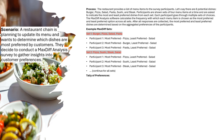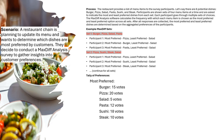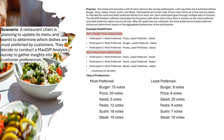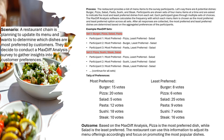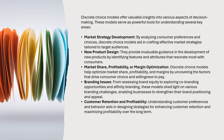For example, set one includes burger, pizza, salad, and pasta; set two includes pizza, sushi, steak, and salad. Participants ranked each set, indicating their most and least preferred options. After tallying all preferences, the most preferred votes are: burger 15, pizza 20, salad 5, pasta 12, sushi 18, steak 10. Least preferred votes are: burger 8, pizza 6, salad 25, pasta 9, sushi 7, steak 16. Based on this MaxDiff analysis, pizza is the most preferred dish while salad is the least preferred. Restaurants can use this information to adjust menu offerings and focus on promoting the most popular dishes.